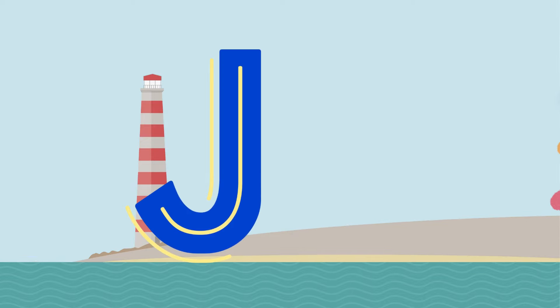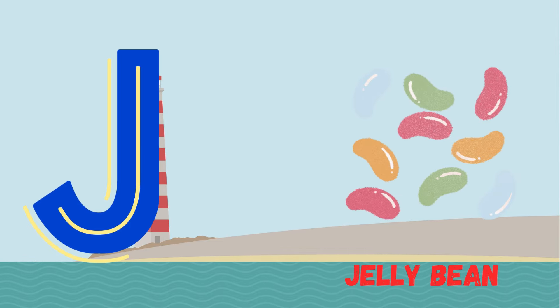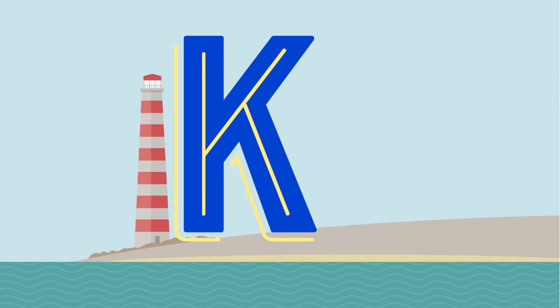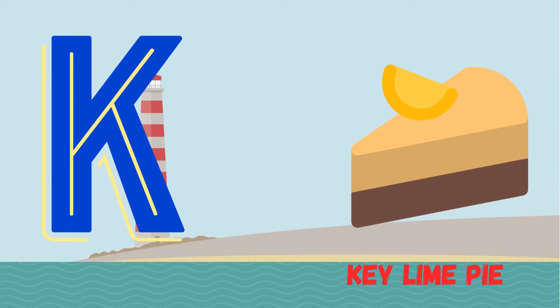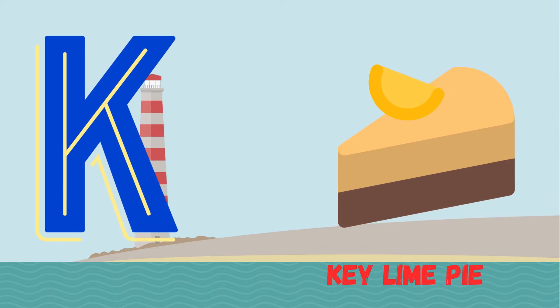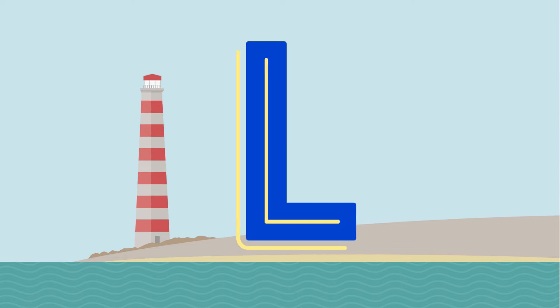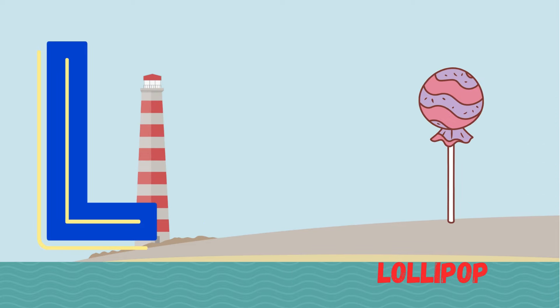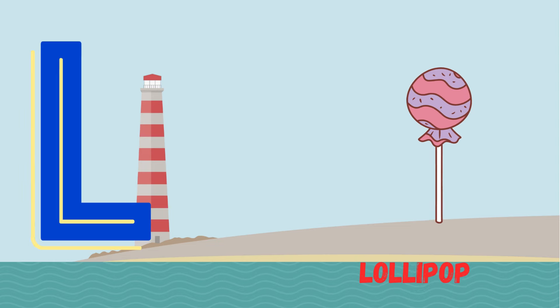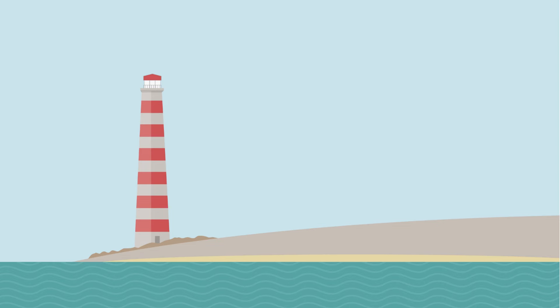J is for Jelly Bean. K is for Key Lime Pie. L is for Lollipop.